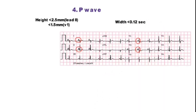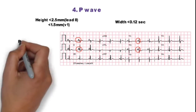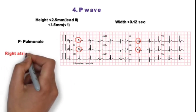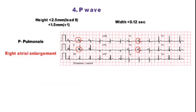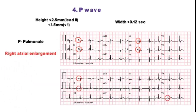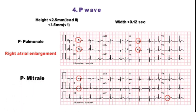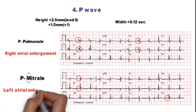In this ECG, in lead 2, P waves are tall and peaked - these are called P pulmonale, which is seen in right atrial enlargement. And if P waves are bifid and have a notch in between, it is called P mitrale, which is seen in left atrial enlargement.